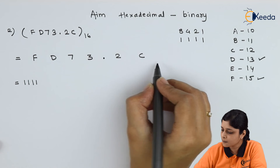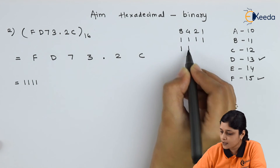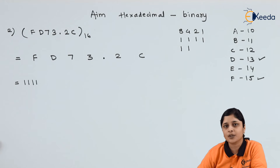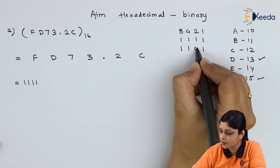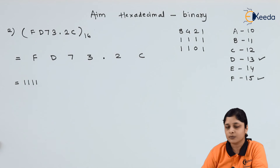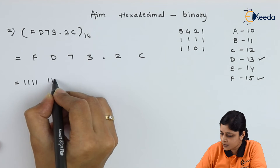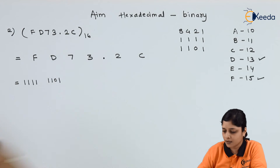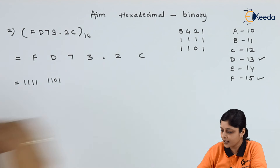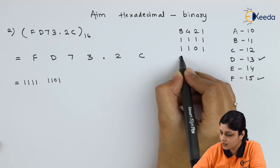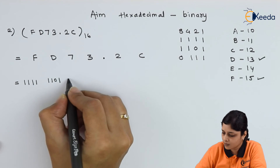For D, the decimal value is 13. 8 plus 4 gives 12, plus 1 gives 13, so binary for D is 1101. For 7, binary is 0111.